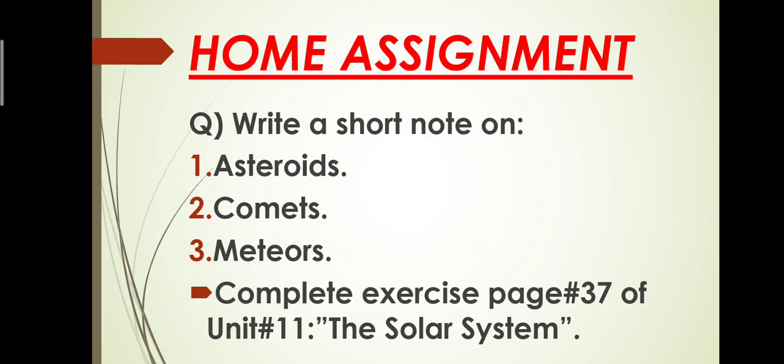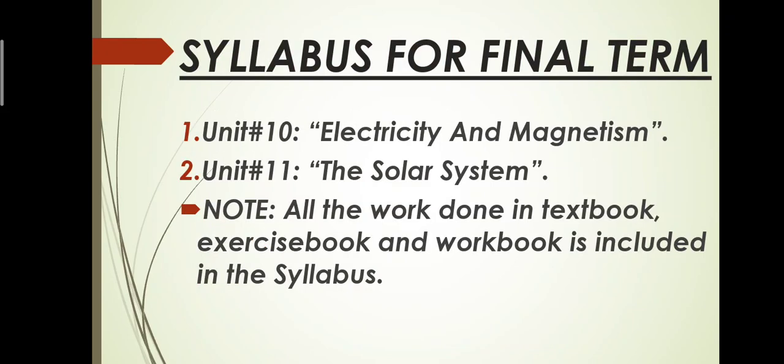After the completion of this question, now the last thing which you have to do is to write down the syllabus for final term. The syllabus is written on your screen, you have to copy down same syllabus in your copies. The final term consists of two chapters: the first one is unit number 10 electricity and magnetism and the second one is unit number 11 the solar system. All the work done in textbook, exercise book and workbook is included in this syllabus.